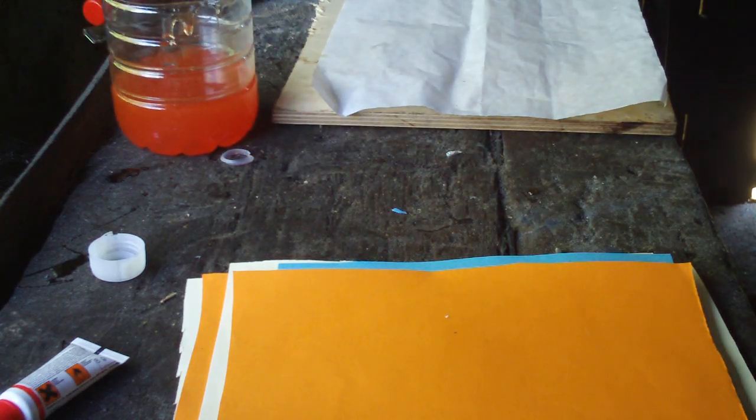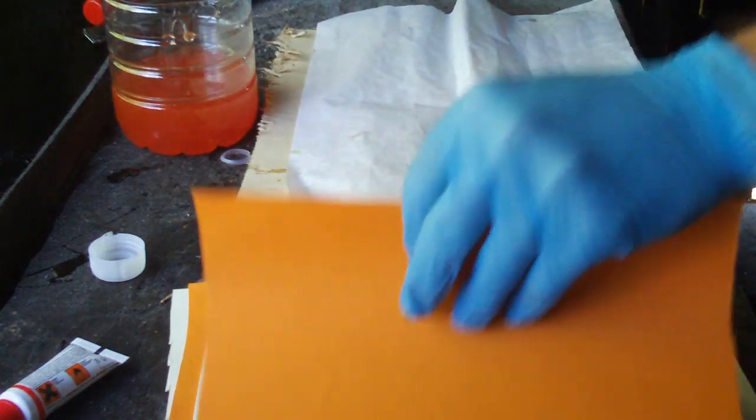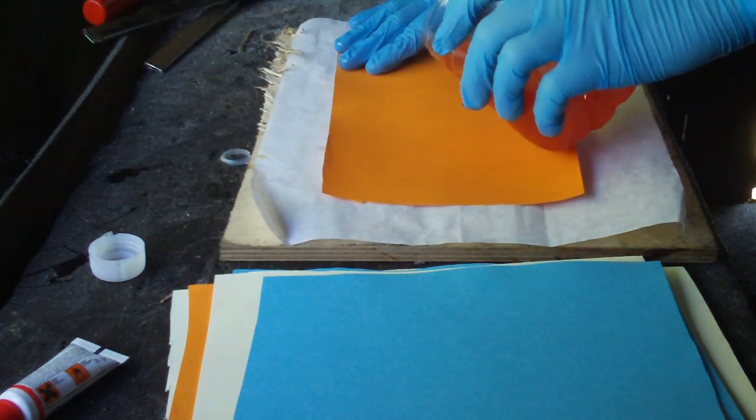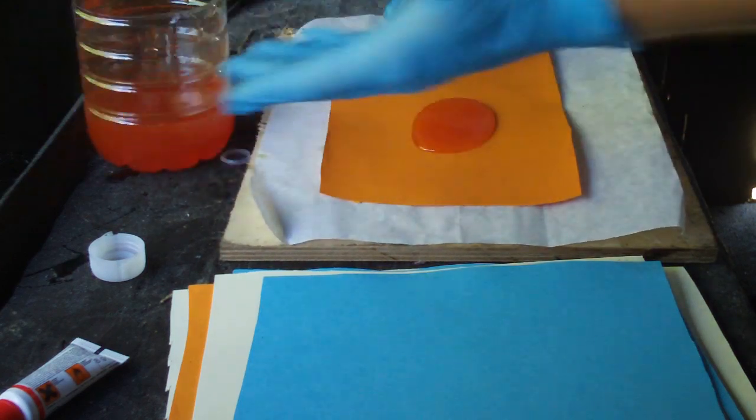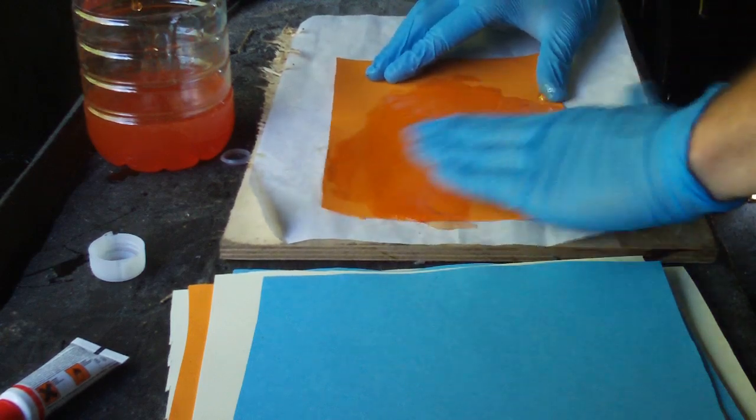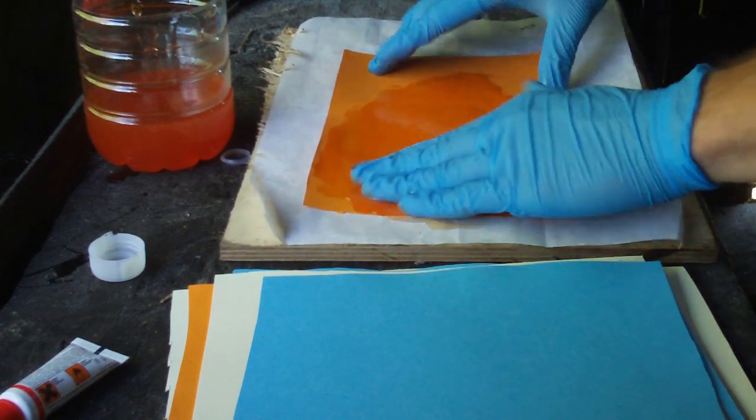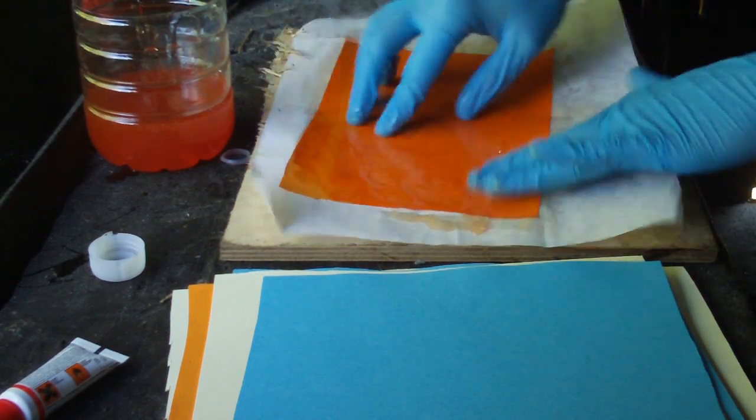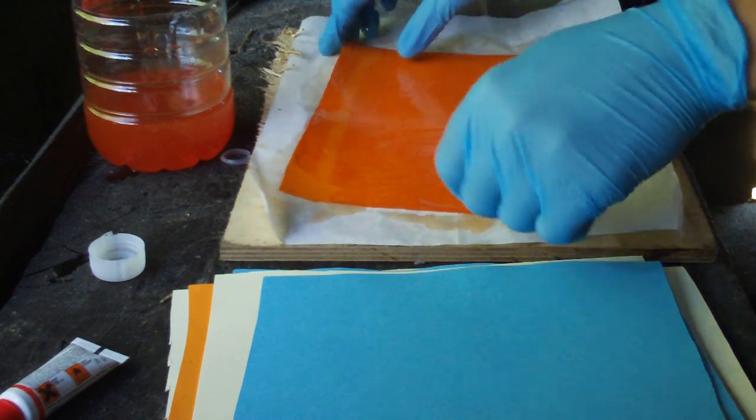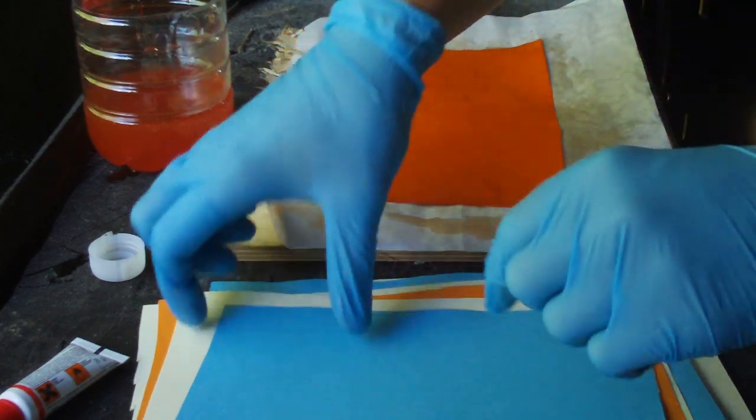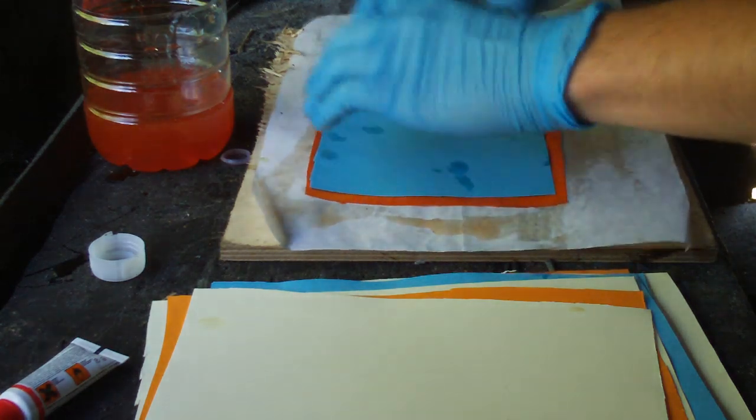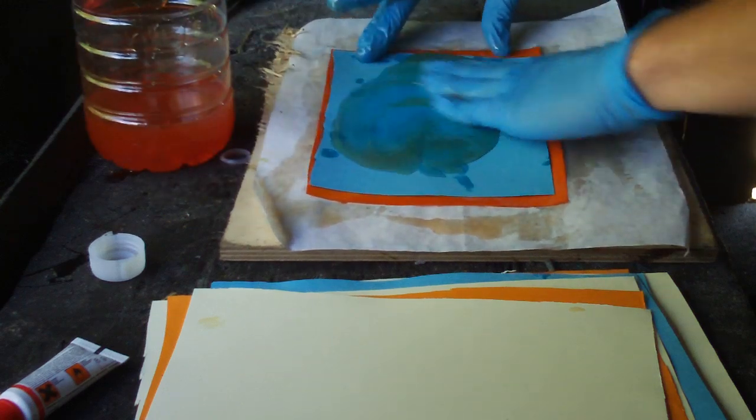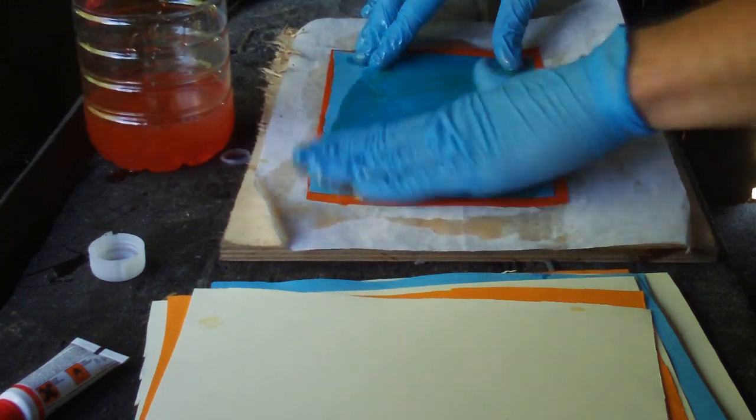You want to do this fast before the resin starts to cure. Take your material, put it down, and start spreading. Just pour it and use your hands and spread it all over the paper or jeans, whatever you're using. Just make sure the whole surface gets the resin - that's what you want to make sure.